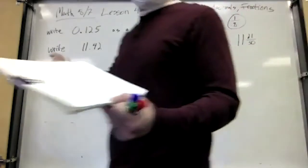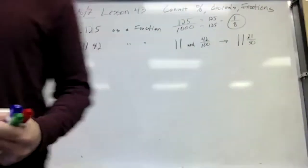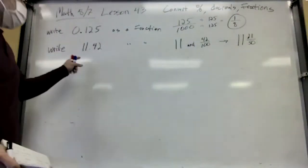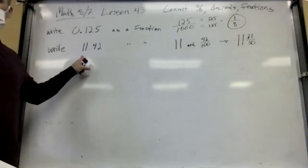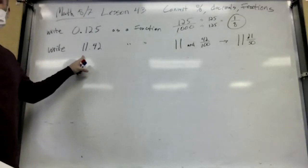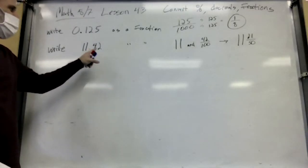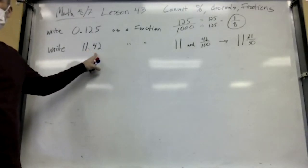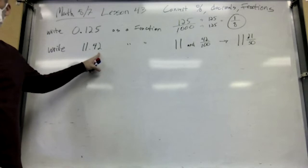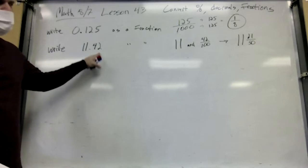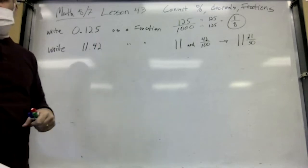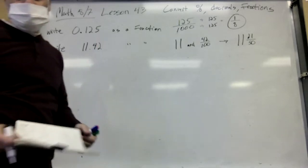So far so good. The number to the left of the decimal doesn't change at all — you just rewrite that, and you just have to write the decimal part over the ending place value and reduce it if you have to.